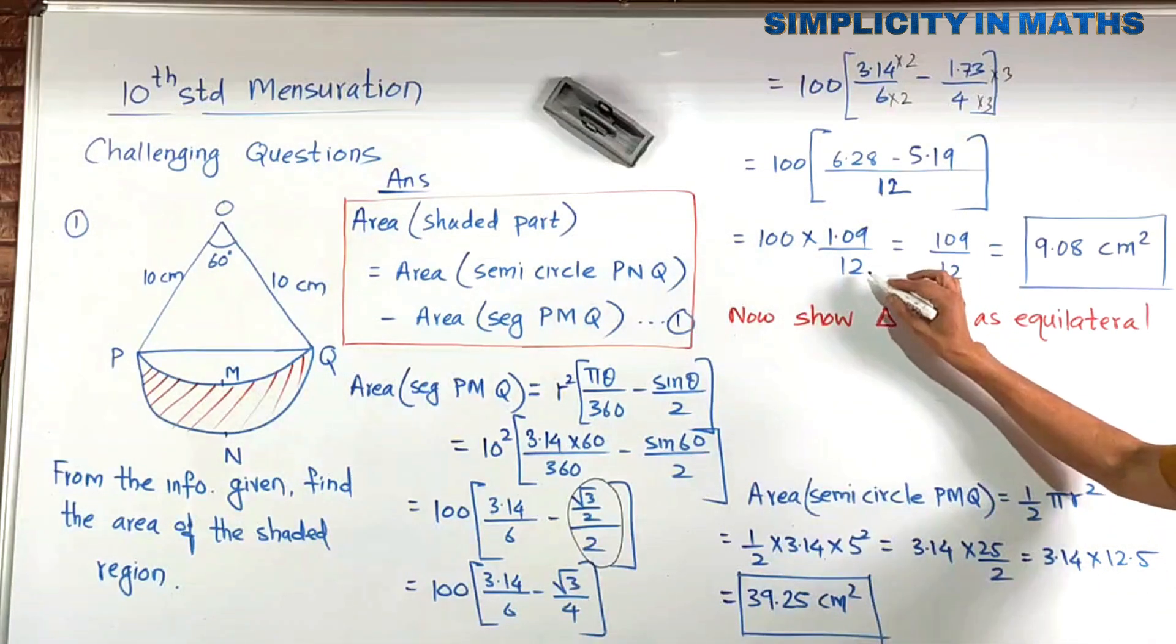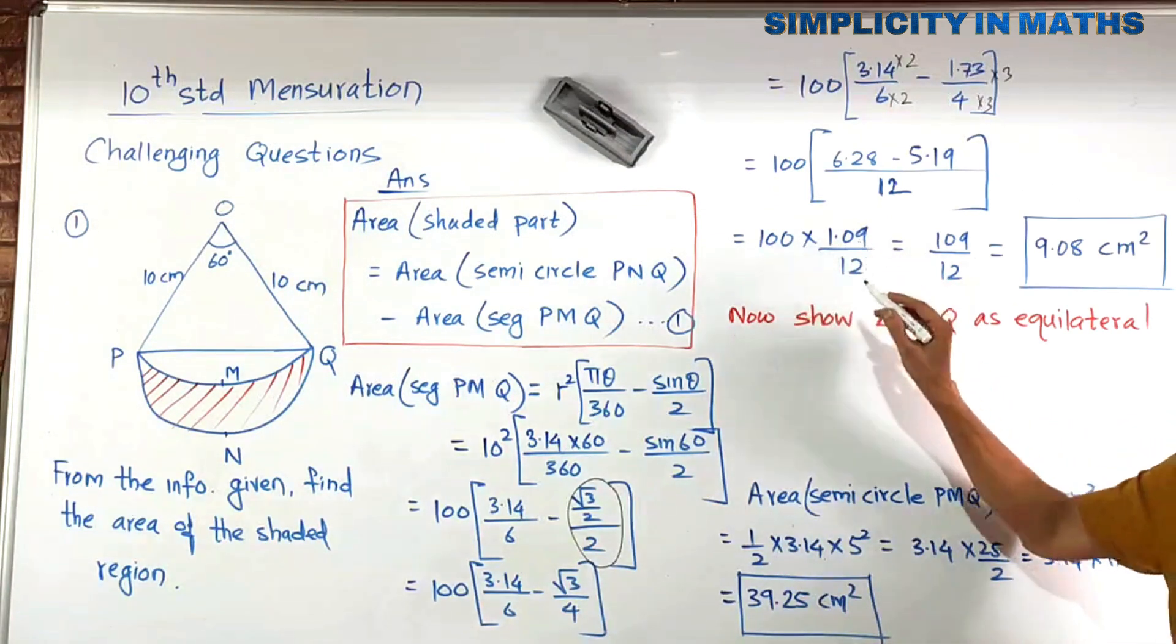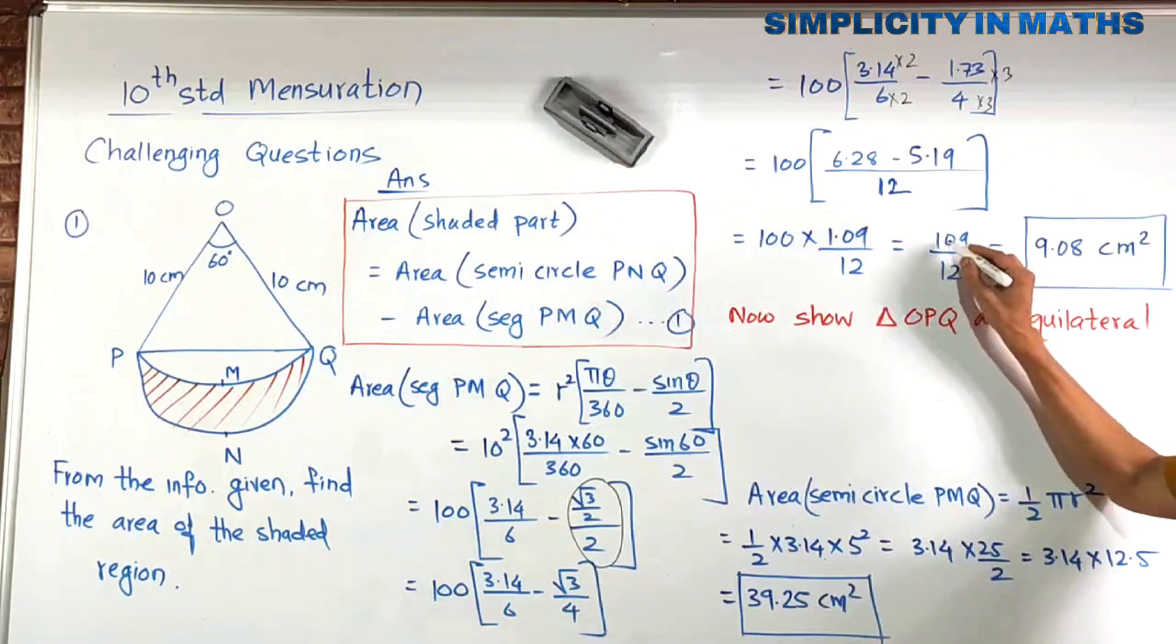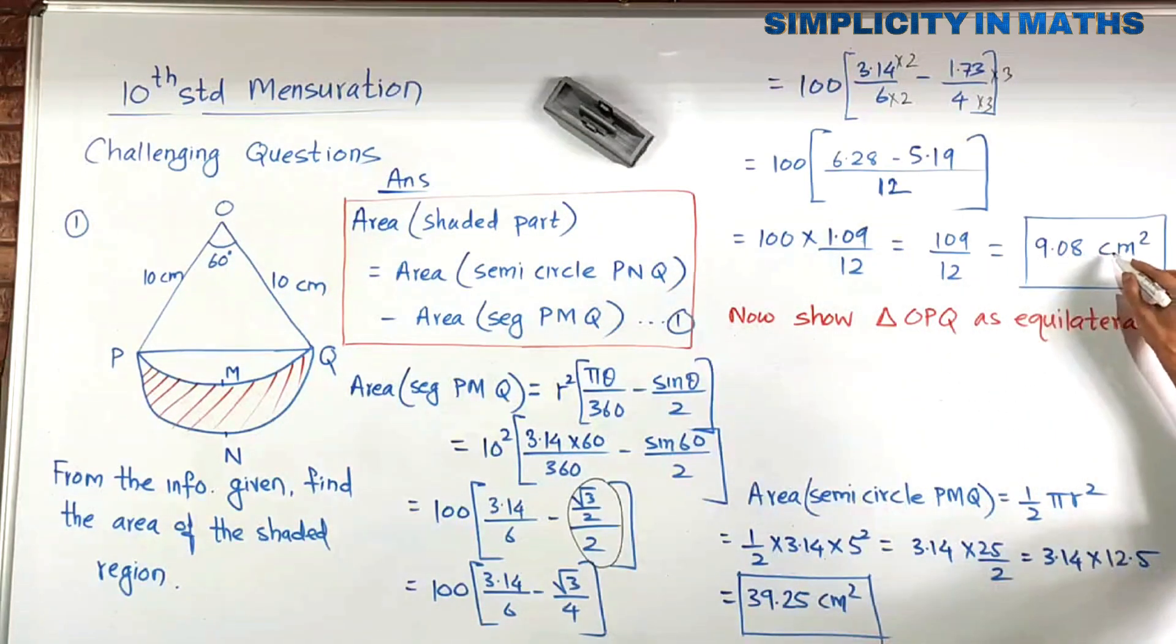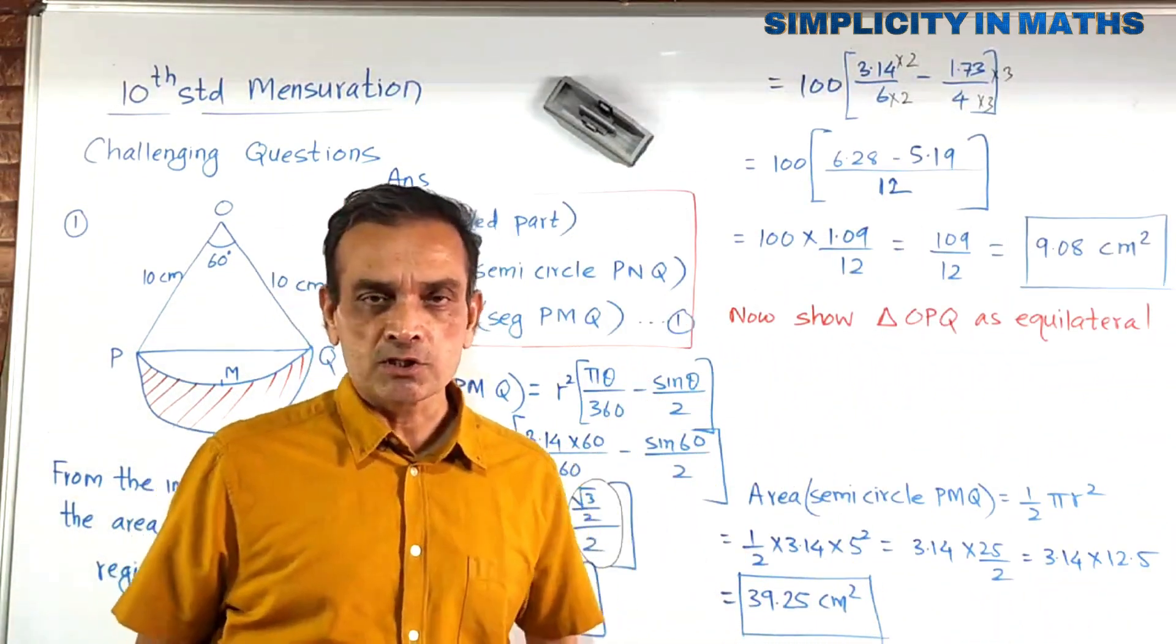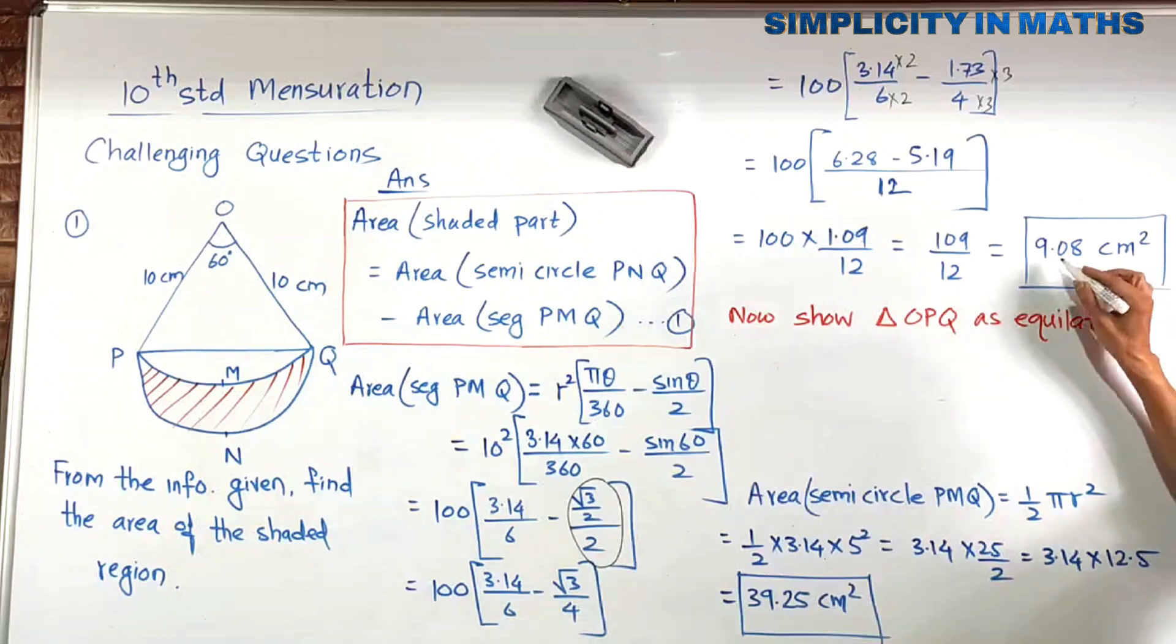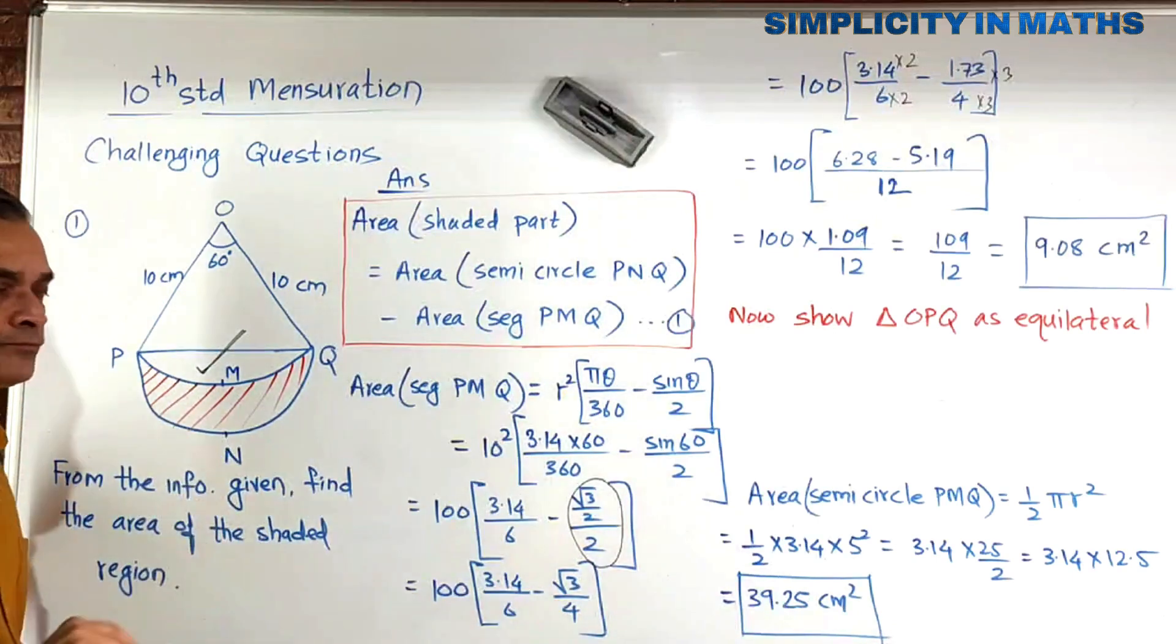12 is the LCM. We have to subtract here. 6.28 minus 5.19 that gives me 1.09 upon 12. So, 1.09 upon 12, I will calculate now. 100 into 1.09. When you multiply any number by 100, the point will shift to the right by 2 places. So, 1.09 upon 12, if you calculate, you get 9.08 cm squared. You all know the basic calculations. So, I haven't shown that over here. But, practice this basic calculations for mensuration.